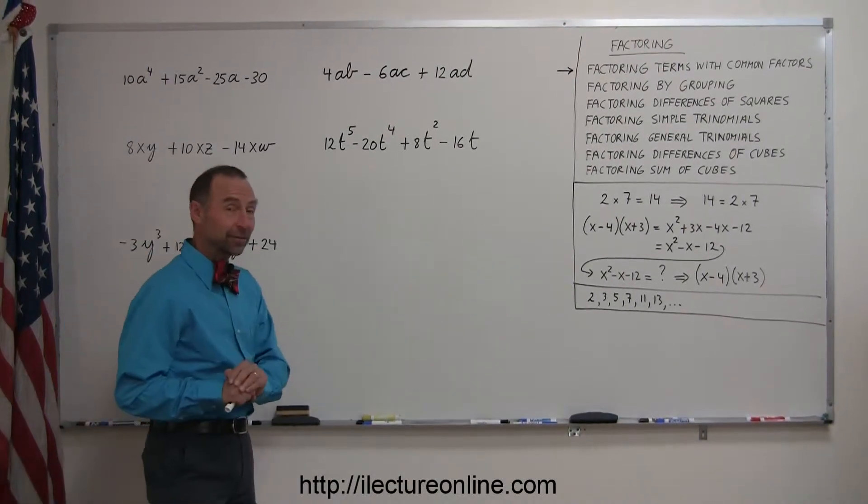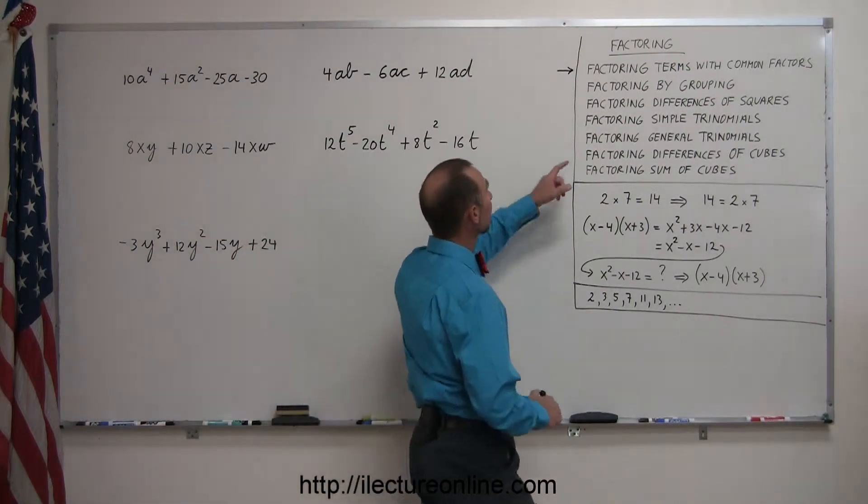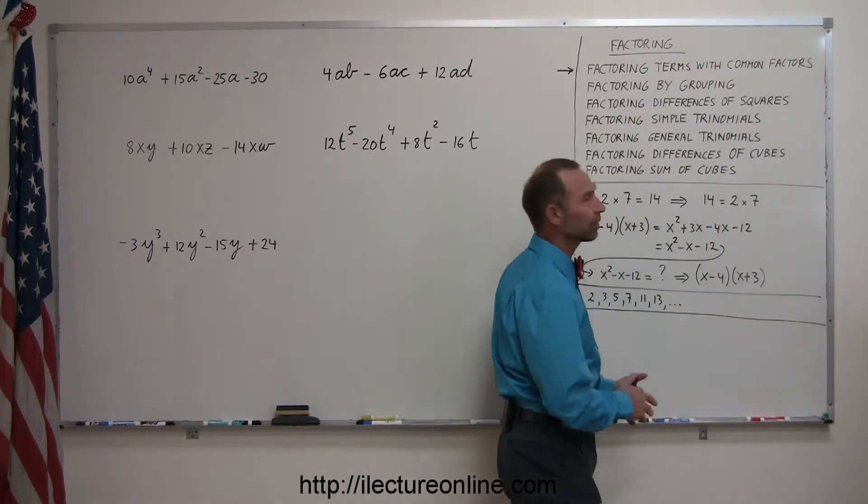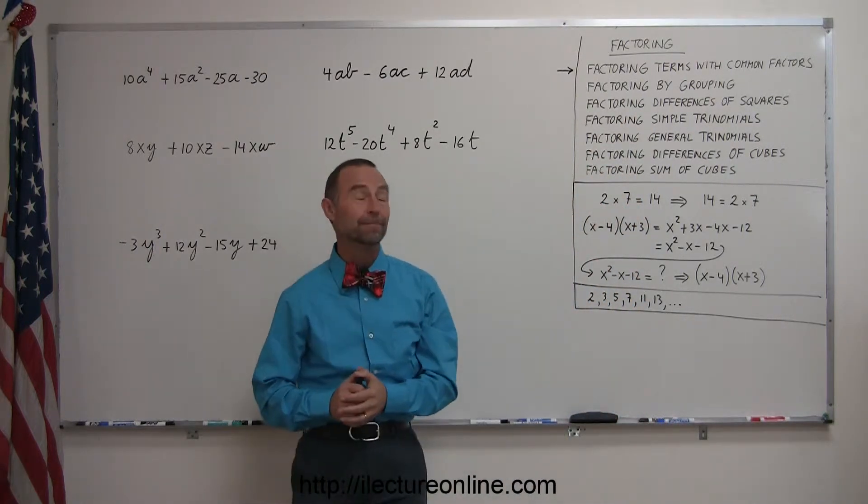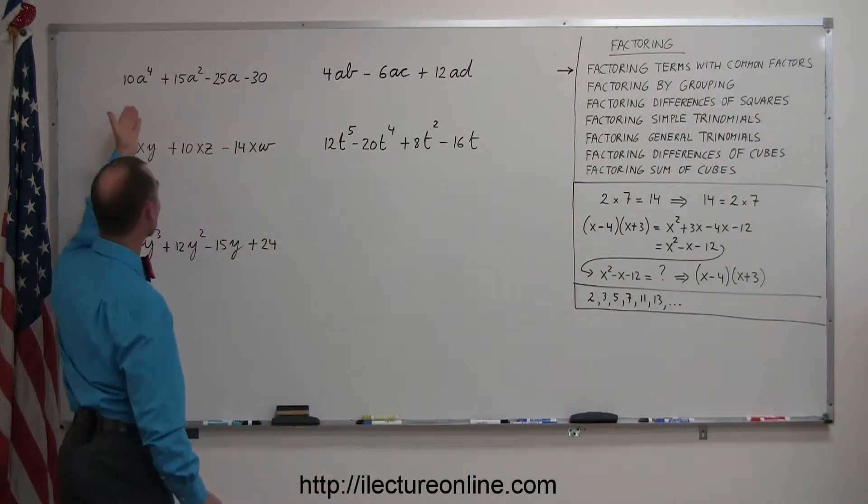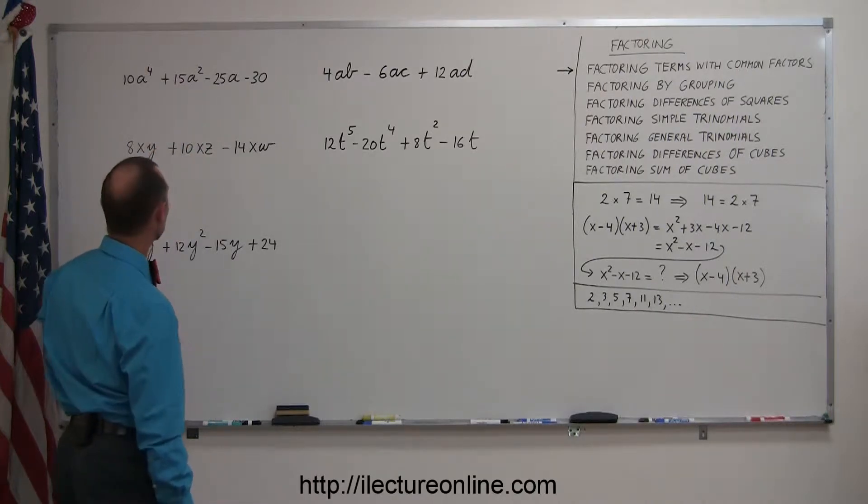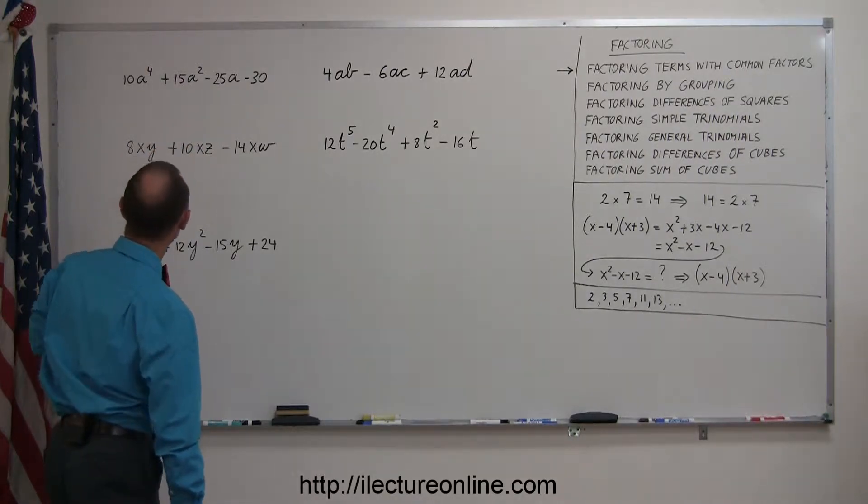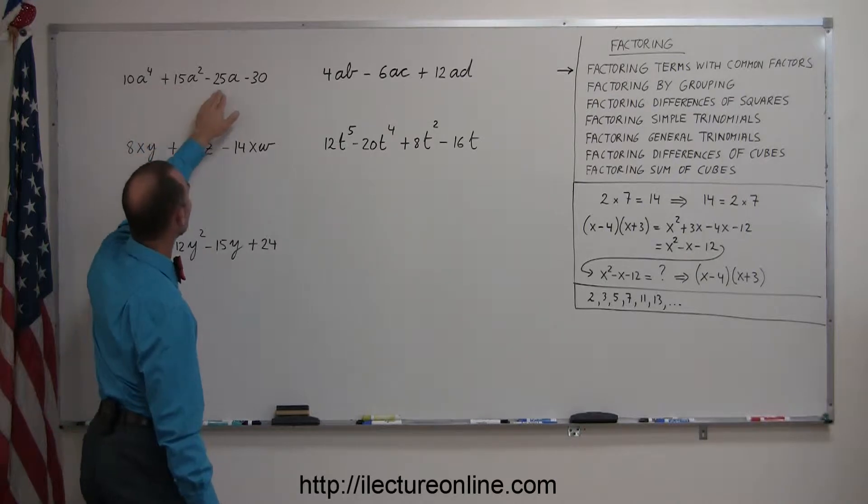All right, so the first type of factoring we want to get started with here is called factoring terms with common factors. What does that mean? Well, here we have an algebraic expression. The algebraic expression consists of four terms in this case.